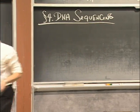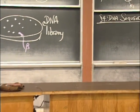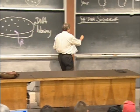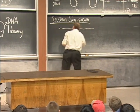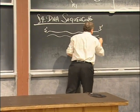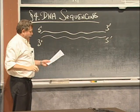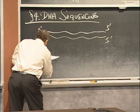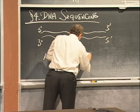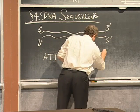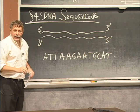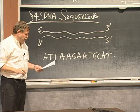All right. So how am I going to invent DNA sequencing? This is a little tough. I have my piece of DNA. I cut it out. Here's my piece of DNA. 5 prime to 3 prime, 5 prime to 3 prime. Let's give it a sequence. A, T, T, A, A, G, A, A, T, G, C, A, T, et cetera.